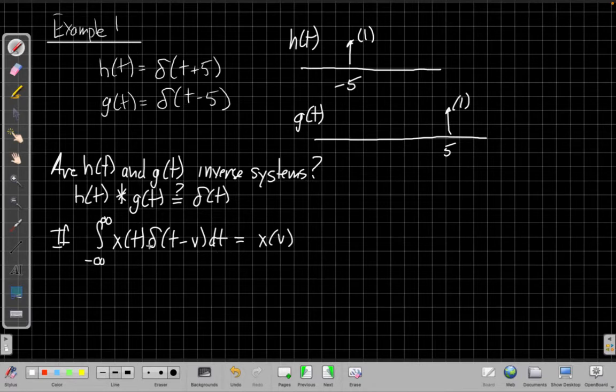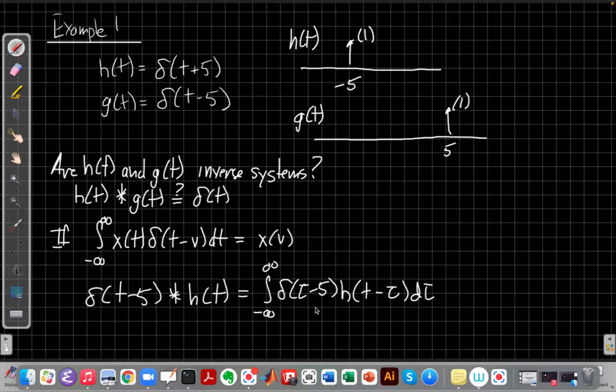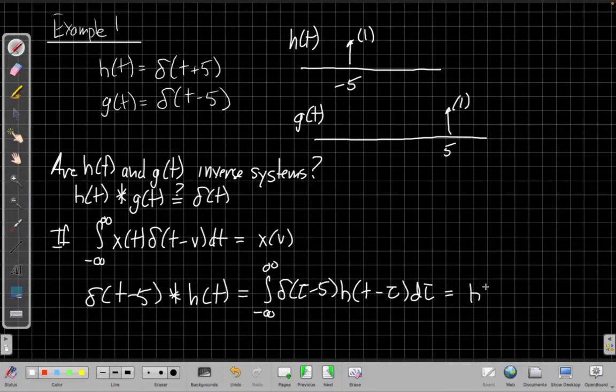So that tells me from the convolution here that I'm going to get the result of putting t minus five in here for h(t). So I can say that delta(t minus five), if I just plug in for g first, convolved with h(t), is what I get when I shift that over by five, right? I set that equal to five, I shift it by five the other way.